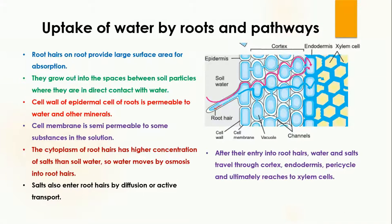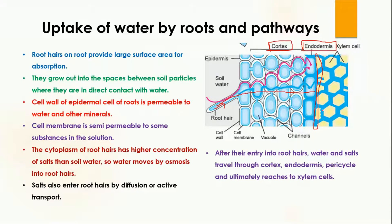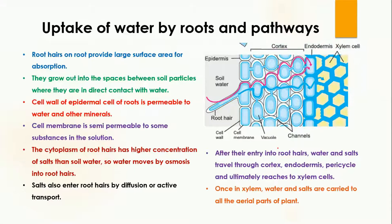After entry into the root hair cells, water and salts travel through the cortex — this part here is the cortex — then enter into the endodermis — this part here is the endodermis. Along with this, they travel through the pericycle, which is another layer of cells, and ultimately they reach inside the xylem.